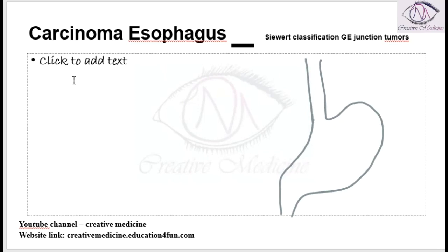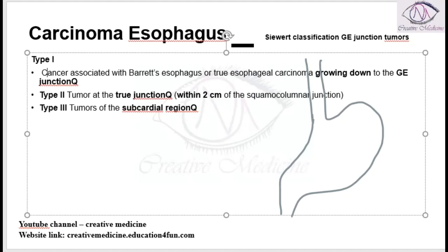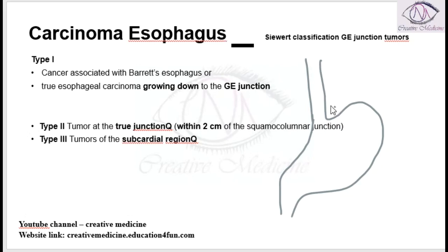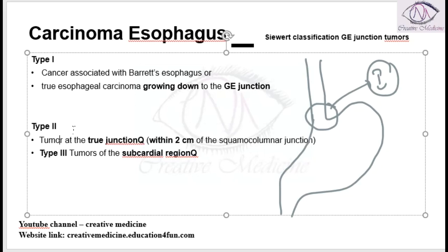In Type 1, the cancer is associated with Barrett's esophagus, or it is actually a true cancer present at the gastroesophageal junction. It is growing down through the gastroesophageal junction — that is Type 1.